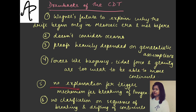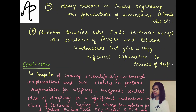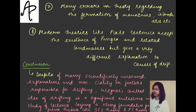There has been no explanation given by Wegener for the trigger mechanism for the breaking of Pangaea — even if he claimed that at some point Pangaea broke up and split, there has been no clarification on the sequence of the breaking and drifting of continents — how exactly the shift happened. There have also been many errors in the theory regarding the formation of mountains, islands, and arcs.